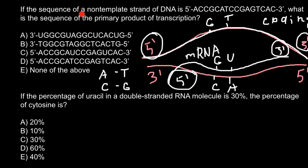Our question is: if the sequence of the non-template strand of the DNA is the given sequence, we now know that the sequence of the message RNA — the primary product of transcription — would be the same, with the only difference that in message RNA we have uracil instead of thymine. So our message RNA has the same sequence with uracil replacing each thymine.